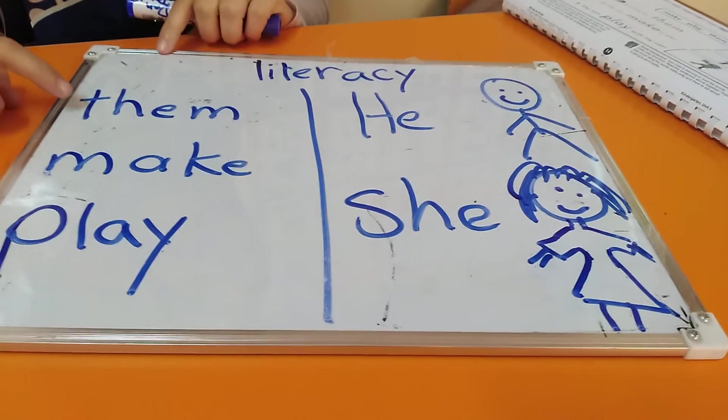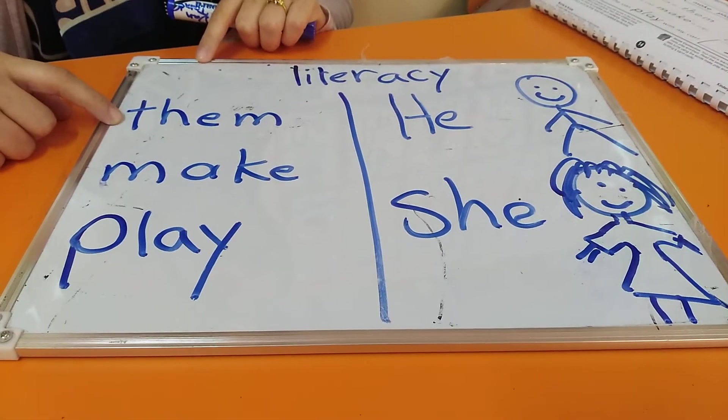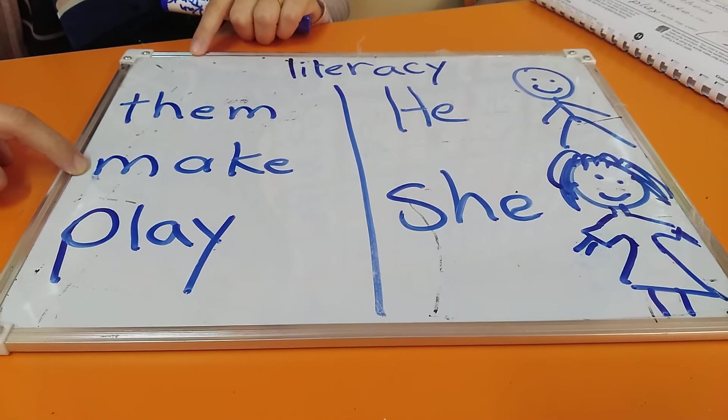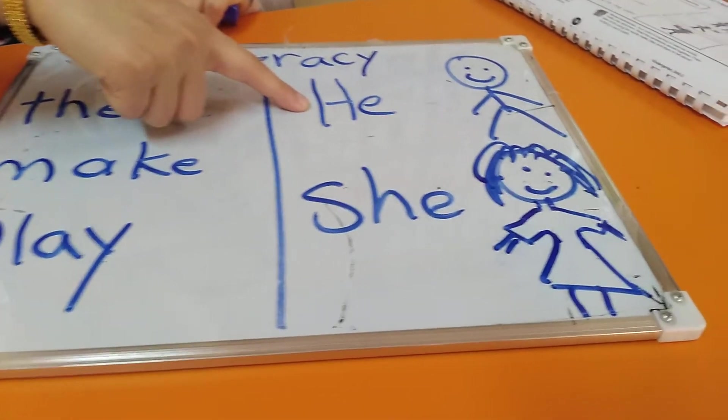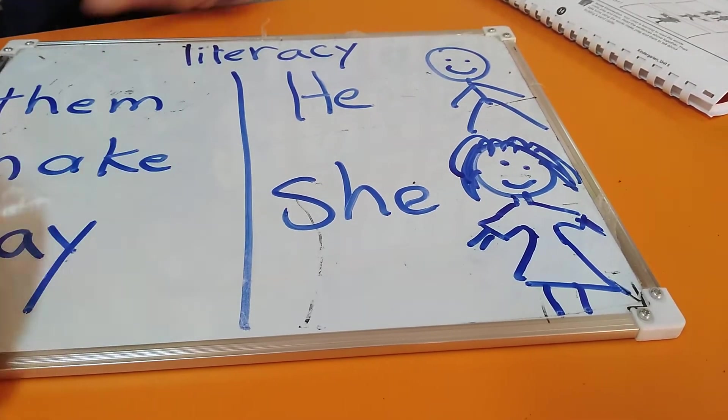Let's read all of the words one more time. Them, make, play, he, she. Excellent. Now, let's read our text.